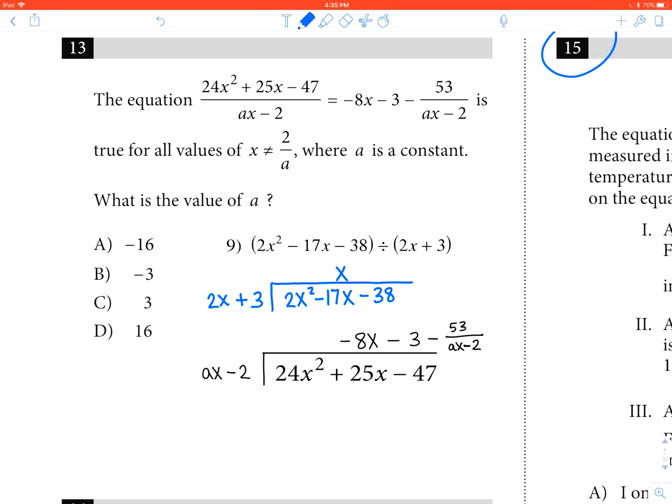In that case, negative 8x times what x would equal 24? It would have to be negative 3x. Because negative 3x times negative 8x is positive 24x squared.